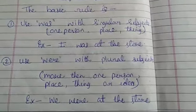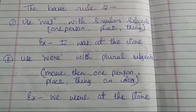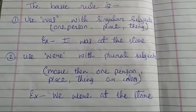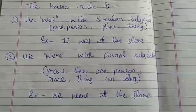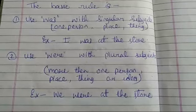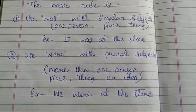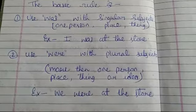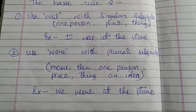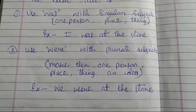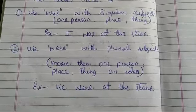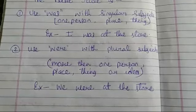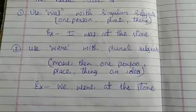'Were' will always come with plural subjects — more than one person, more than one place, more than one thing, or more than one idea. For example: 'We were at the store.'